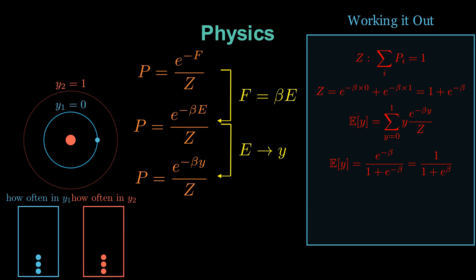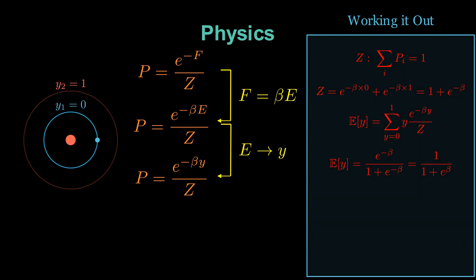This is a beautiful result. It's exactly the sigmoid function that appears in logistic regression. If you plot it as a function of beta, you'll see a smooth S-shaped curve.